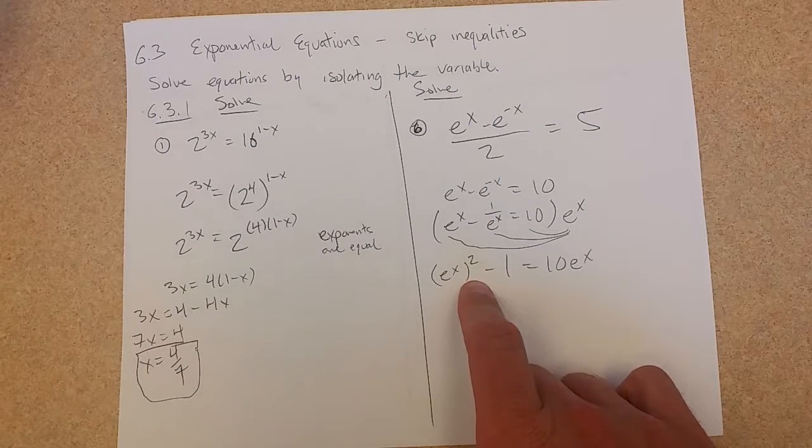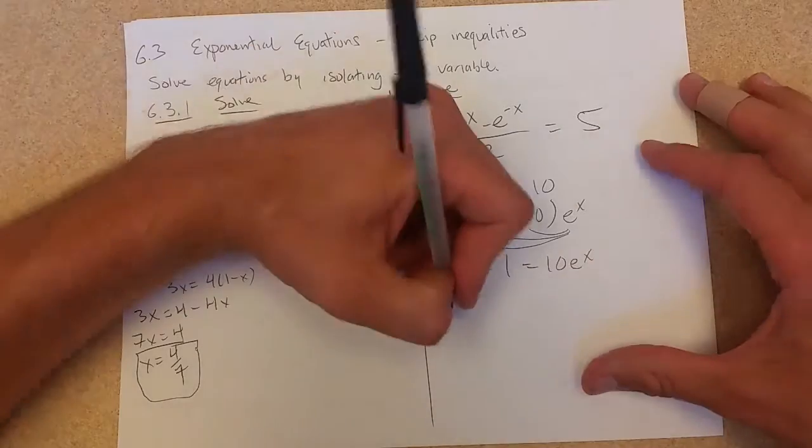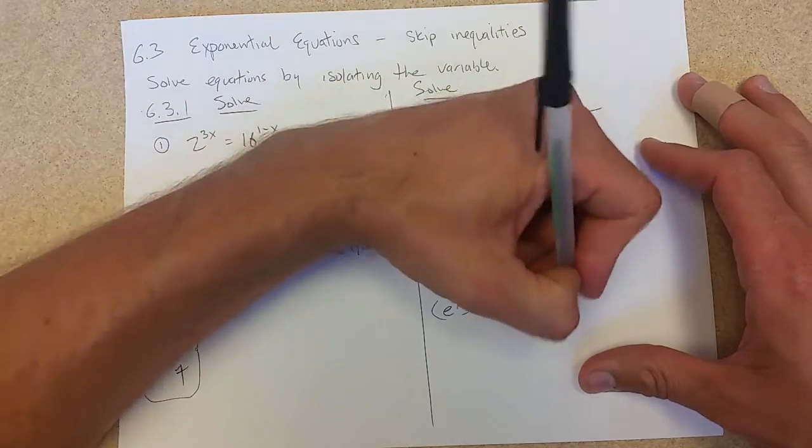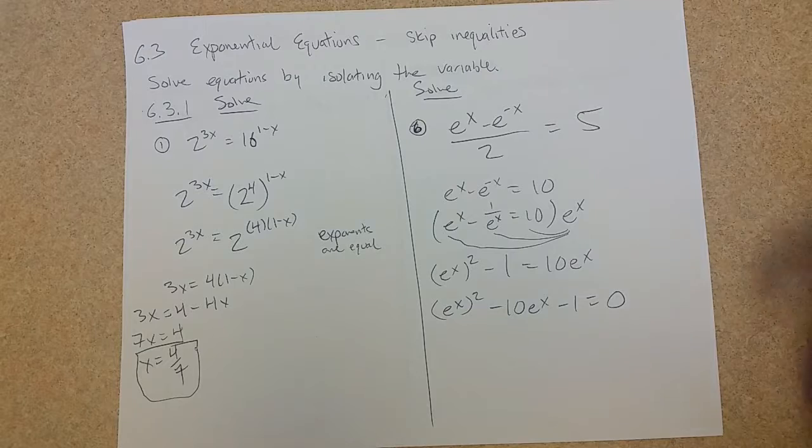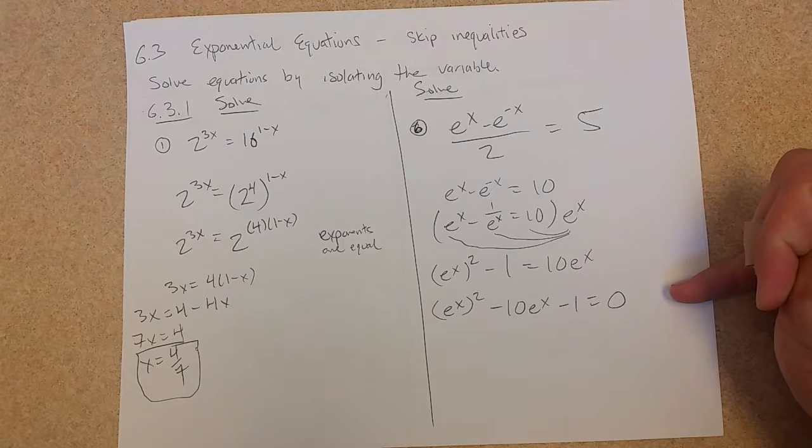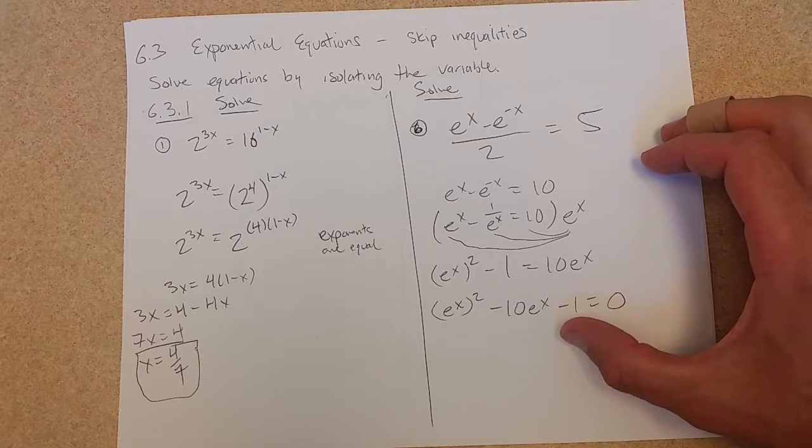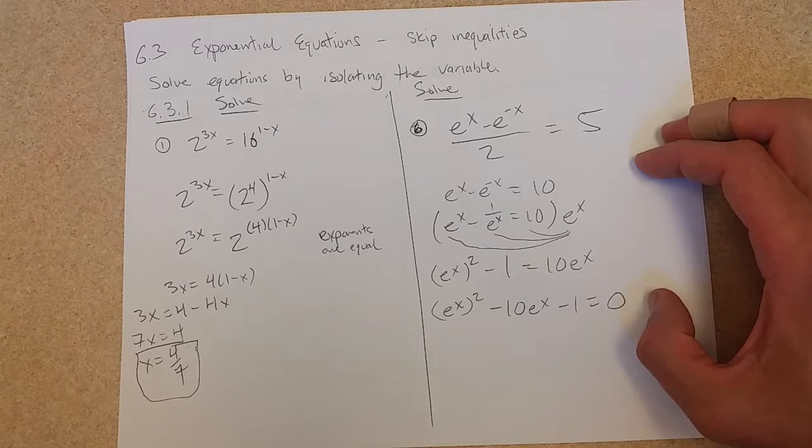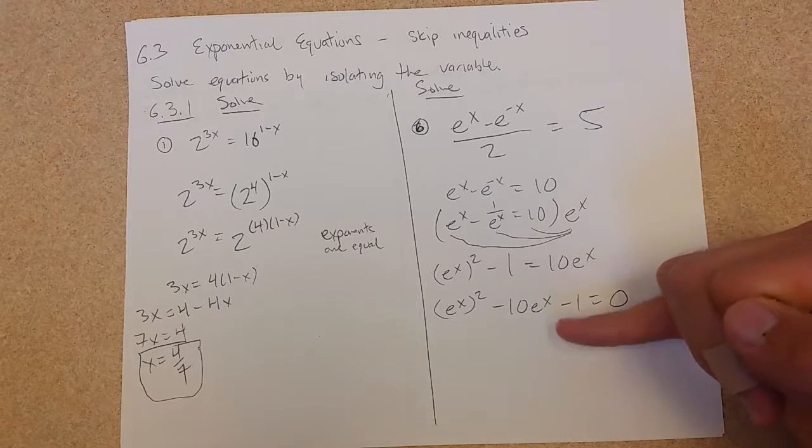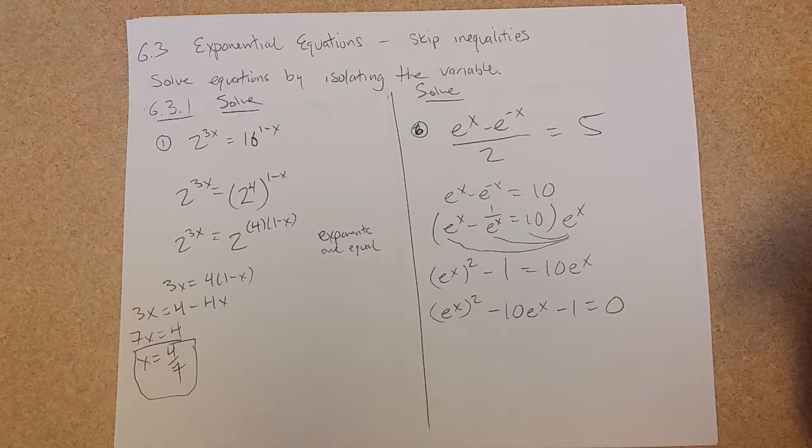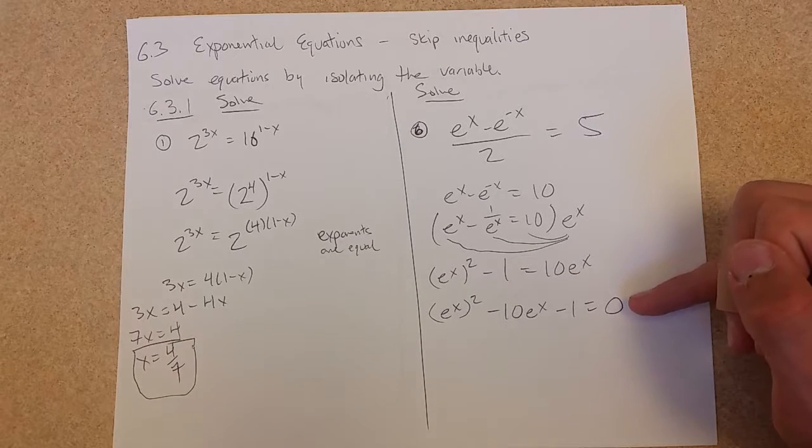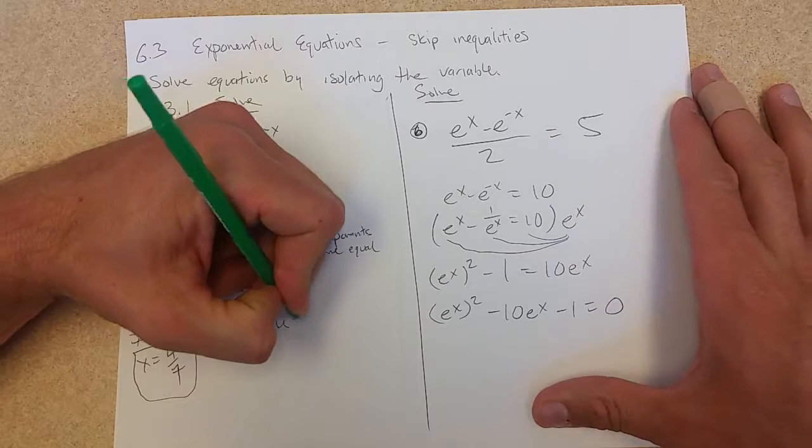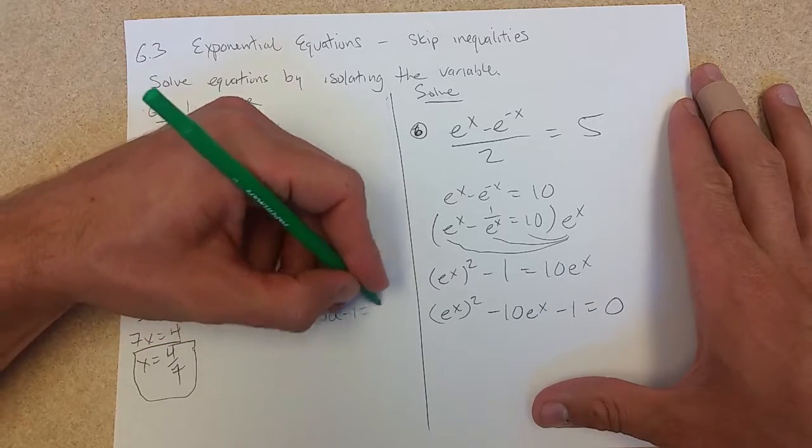So e to the x times e to the x, or e to the x squared, minus 1 equals 10e to the x. I could write this as e to the 2x, but I'm going to leave it like this instead. And I subtracted 10e to the x. It may seem like a really good idea to add one to the other side, but that won't be a very useful move here, because then I will be able to factor out e to the x, but I won't be able to use the zero product property.